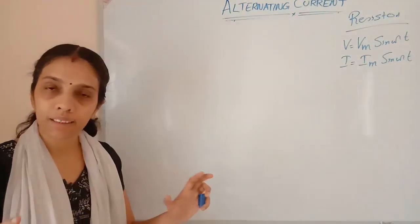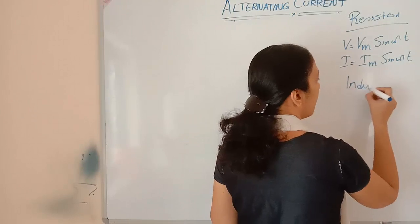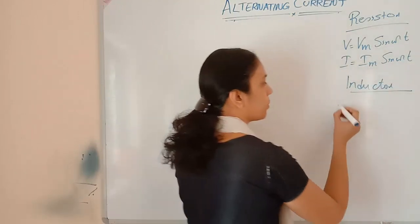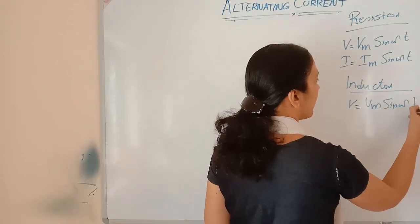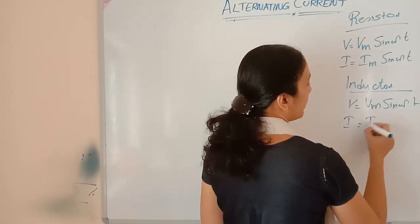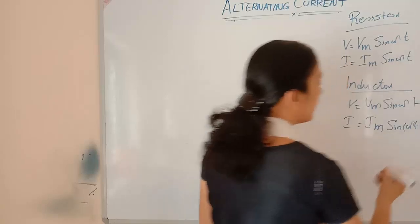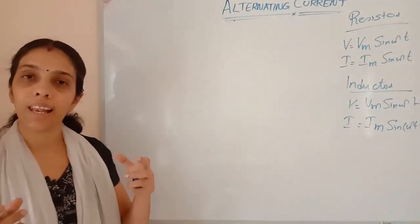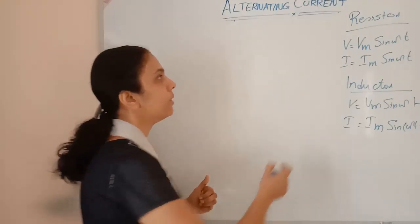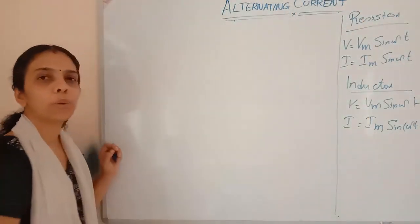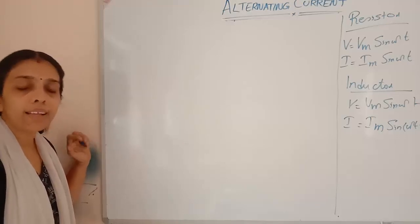Both don't have any phase difference. But if we apply an inductor through an AC source with the same voltage Vm sin(ωt), the current is Im sin(ωt − π/2). That means the current is lagging behind the voltage by a factor of π/2. Today we are going to study what happens when an AC source is applied to a capacitor.